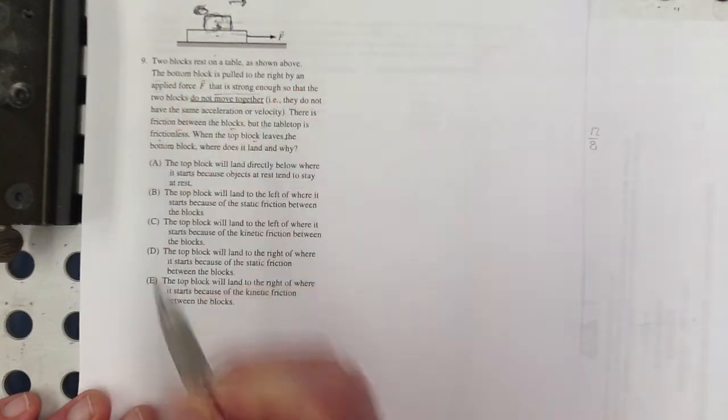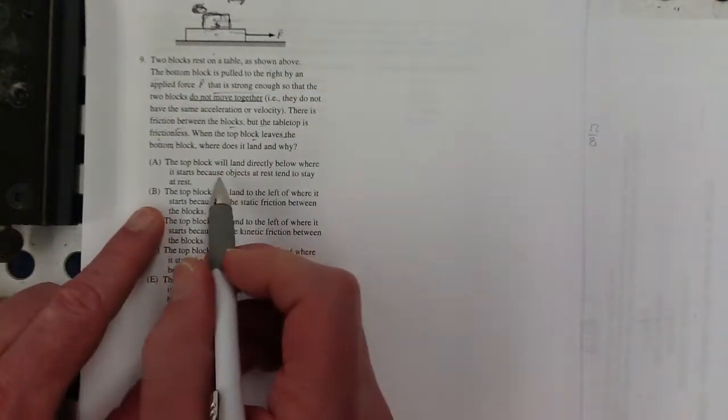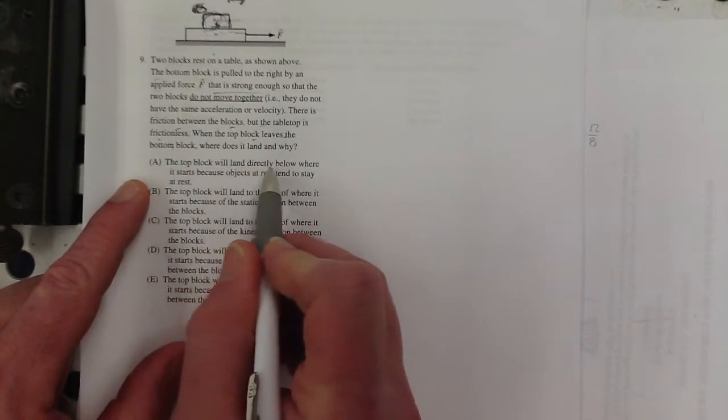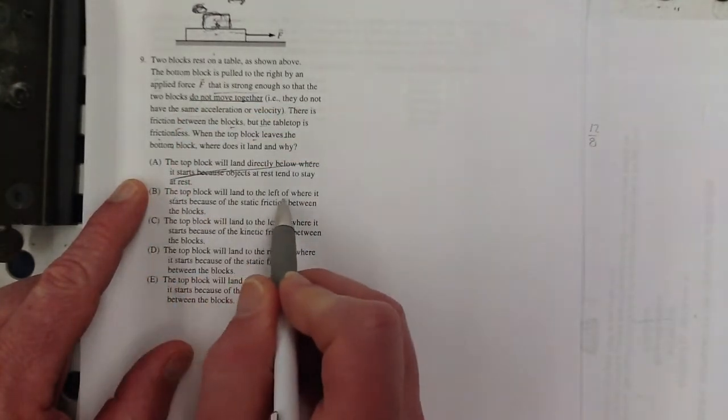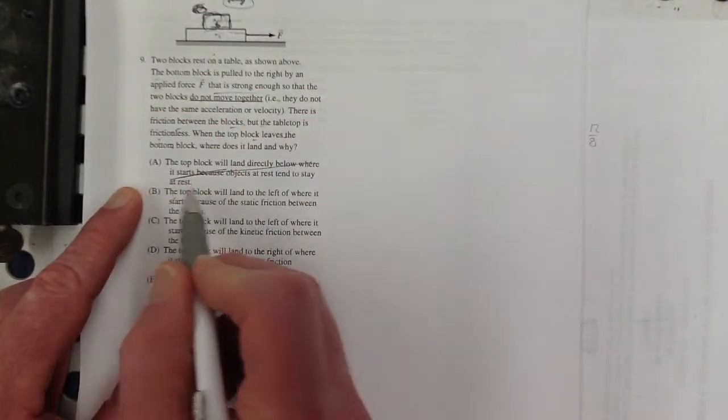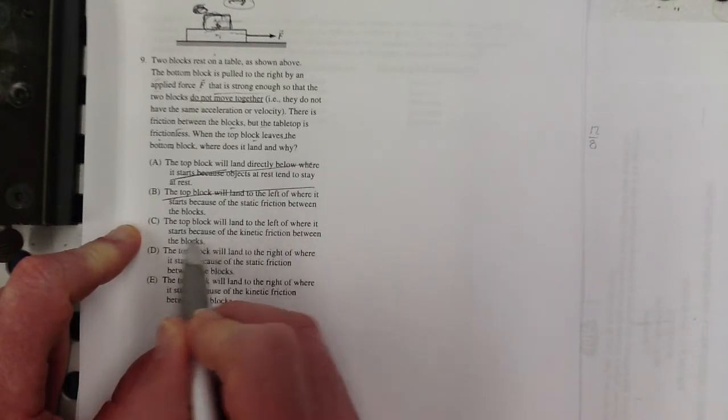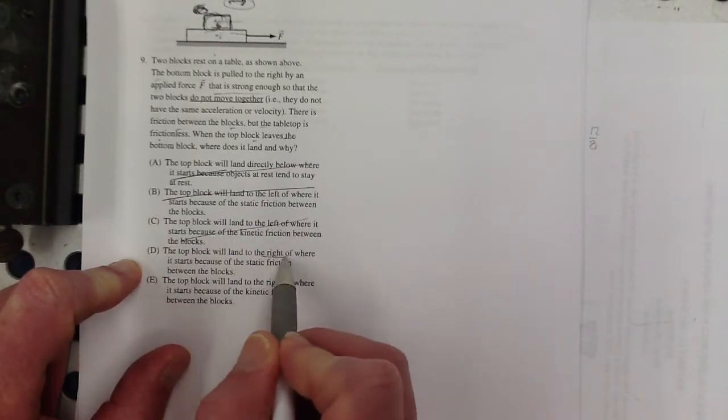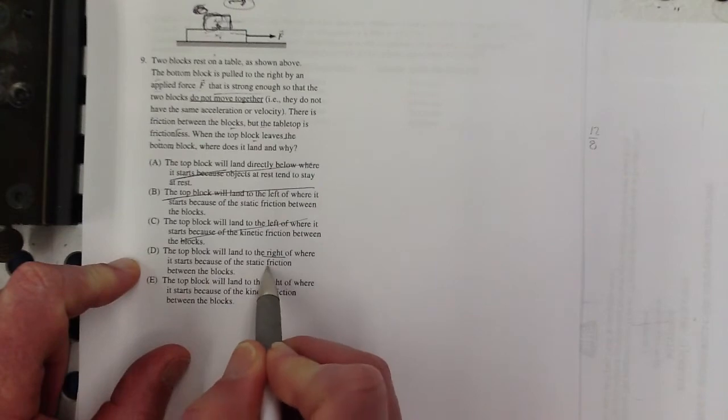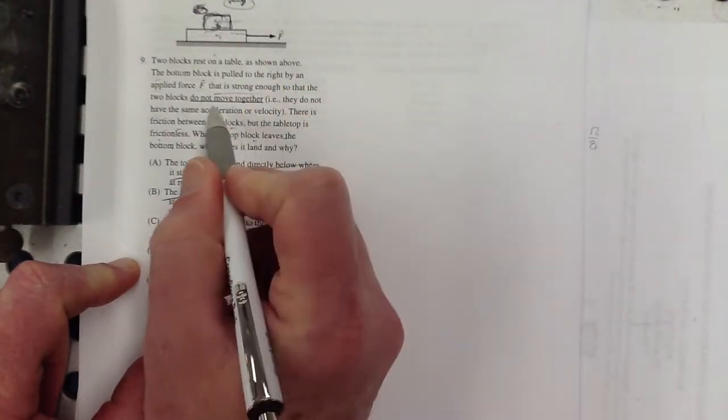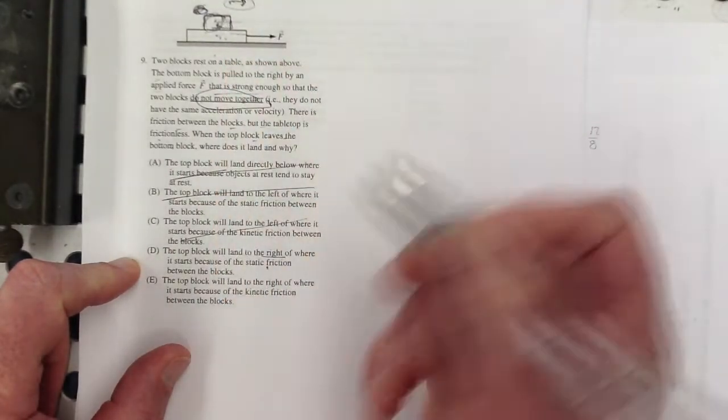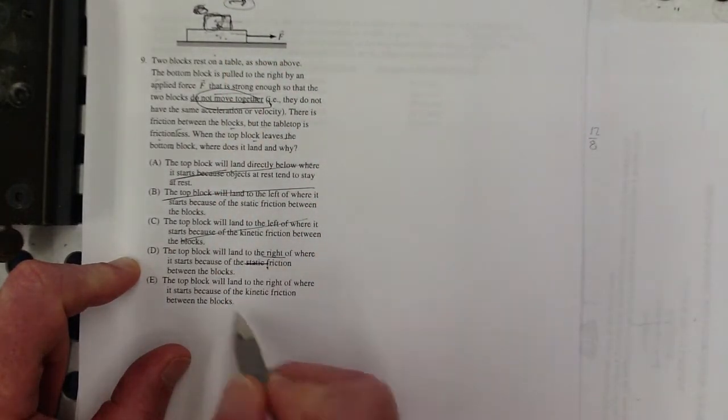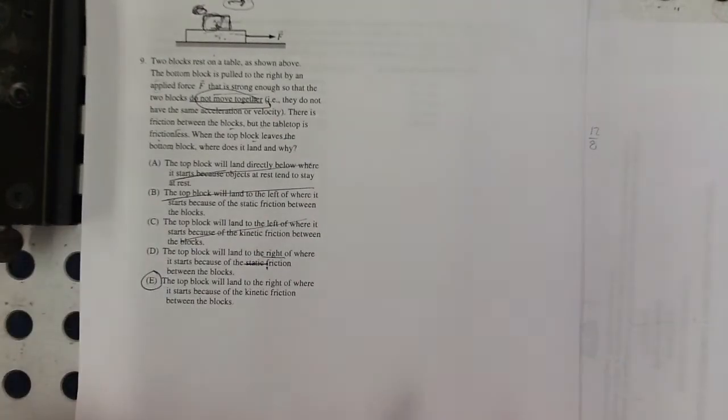The friction here, if there was zero friction, this would just stay at rest, and it would then drop straight down, like the tablecloth trick. And then that would drop straight down. But there is some friction, so that is going to drag this along this way. The friction on this block will be in this direction. You could imagine if there was enough static friction, then it would just ride on top of this block, right? So the top block will land directly below, no, because there is friction. The top block will land to the left, no, because the force on it is that way. The top block will land to the right, that's true, because of static friction. No, if they're moving, if the blocks do not move together, then this one's slipping against this one. That's kinetic friction, not static friction. So the correct answer would have to be E.